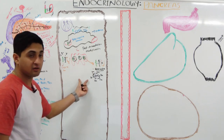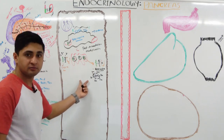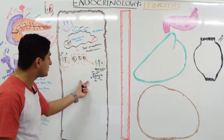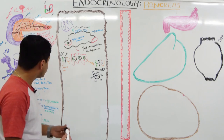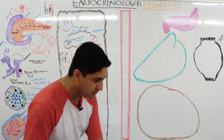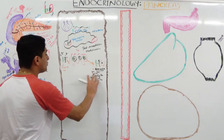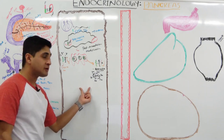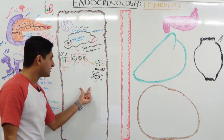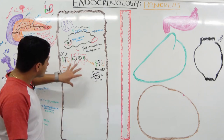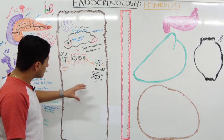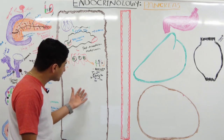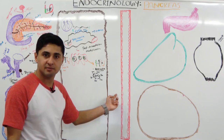That is why the pancreas is known as a heterocrine organ — it has both exocrine and endocrine functions. Now we need to talk about the factors that actually cause secretion of insulin.